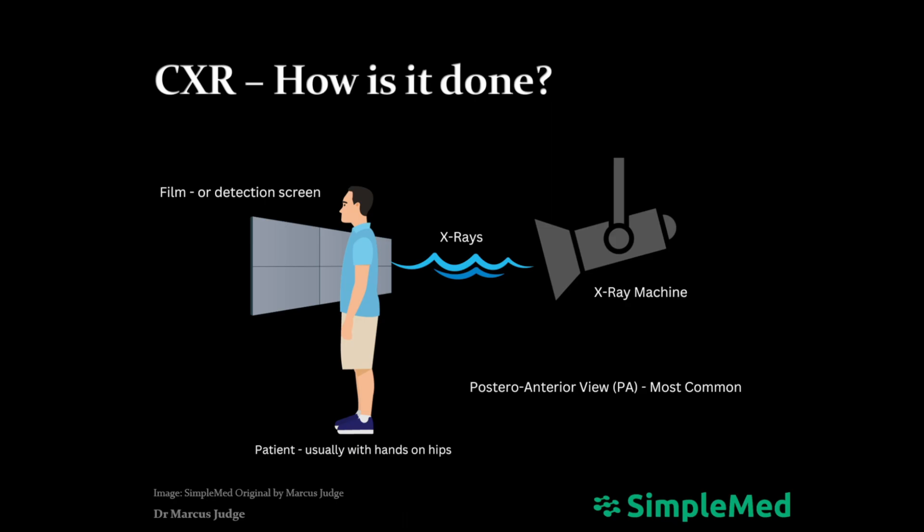So, how is the chest X-ray actually carried out? Put simply, a patient is placed between an X-ray source and a detection screen. Most commonly, the patient is standing with their back towards the X-ray source, with their hands on their hips. When in this configuration, with the source behind the patient, the X-ray view is called a PA view, or posterior anterior view.